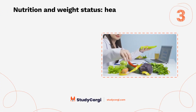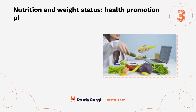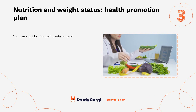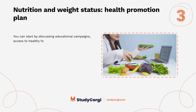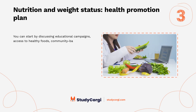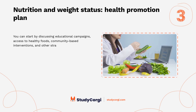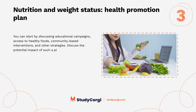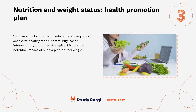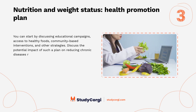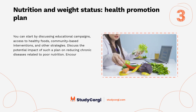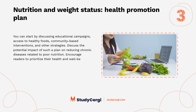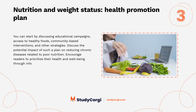Nutrition and weight status health promotion plan. You can start by discussing educational campaigns, access to healthy foods, community-based interventions, and other strategies. Discuss the potential impact of such a plan on reducing chronic diseases related to poor nutrition, and encourage readers to prioritize their health and well-being through informed dietary choices.